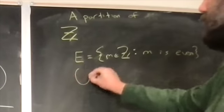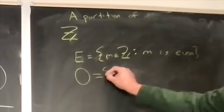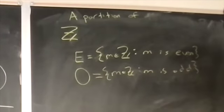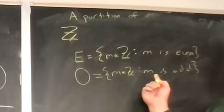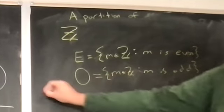We could have the odds, the odd numbers. Every integer is either even or odd, and no integer is both. So this is a perfectly valid partition of the integers.